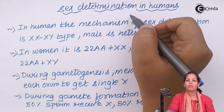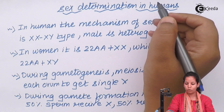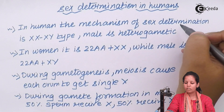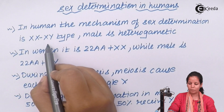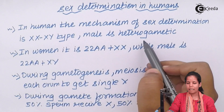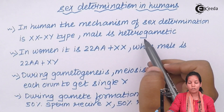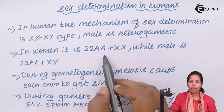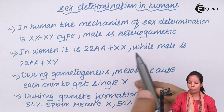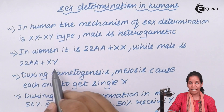Sex determination in human beings: the mechanism of sex determination is the XX and XY type. The male is heterogametic whereas the female is homogametic. In women it is 22 AA plus XX, while the male is 22 AA plus XY.